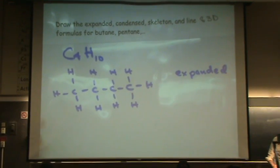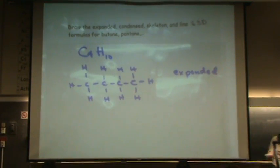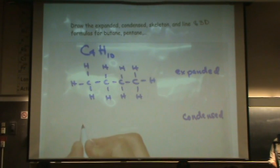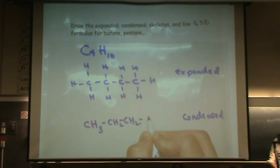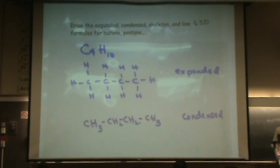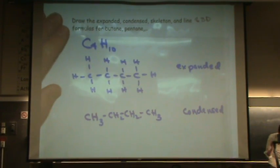If you want to draw the condensed, the condensed is basically the expanded written on one line. So you put the H's together: CH3, CH2, CH2, CH3. And you can choose whether or not to add these bonds for the carbon. They don't have to be added. That's the condensed.